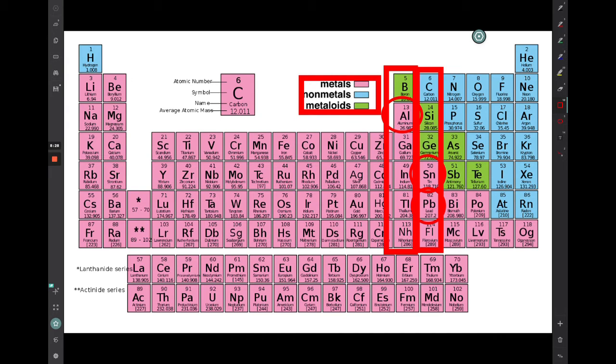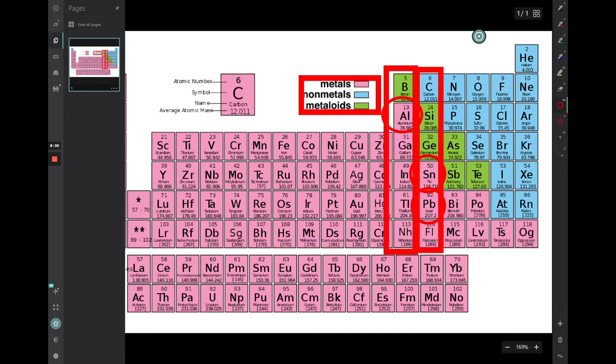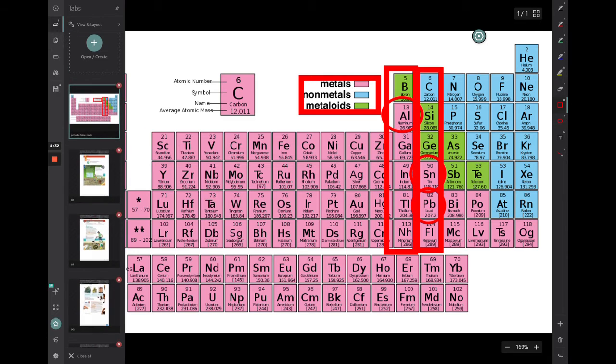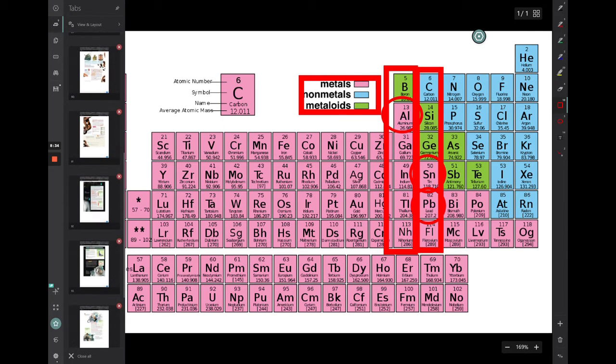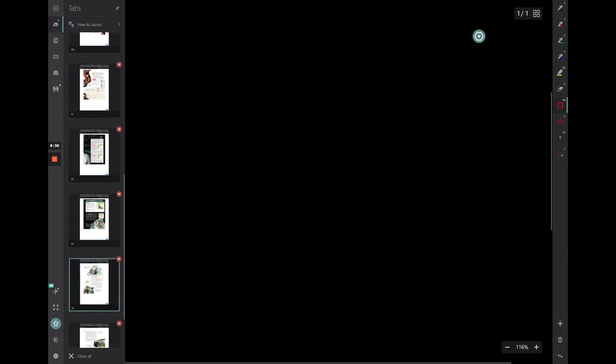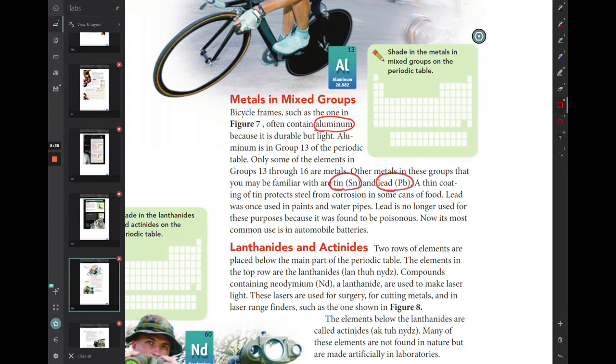So aluminum, tin, and lead are examples of elements that are in what we call mixed groups. So they are in groups that is a mixture of metals and non-metals and metalloids.